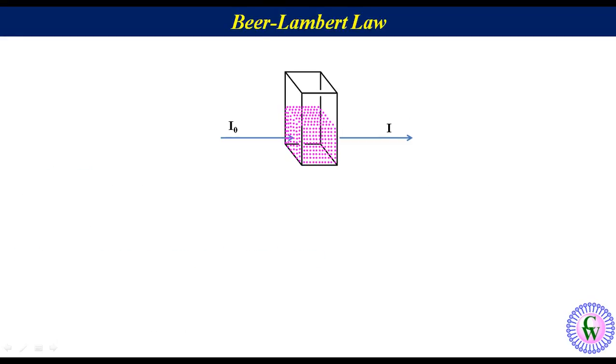Beer-Lambert law is basically a relationship between the attenuation of light through a substance and the property of that substance. It is the combination of two laws, Beer's law and Lambert's law.